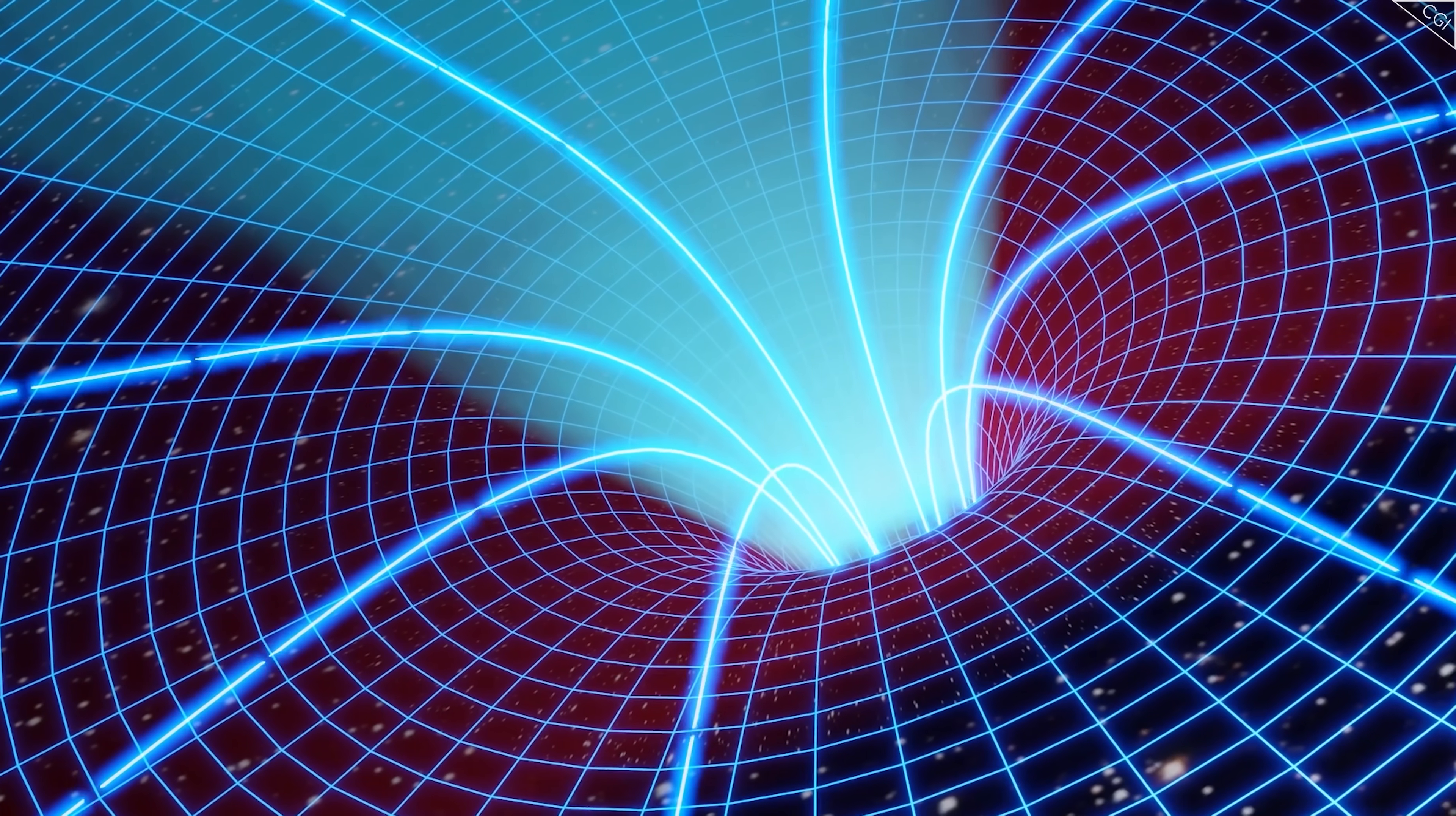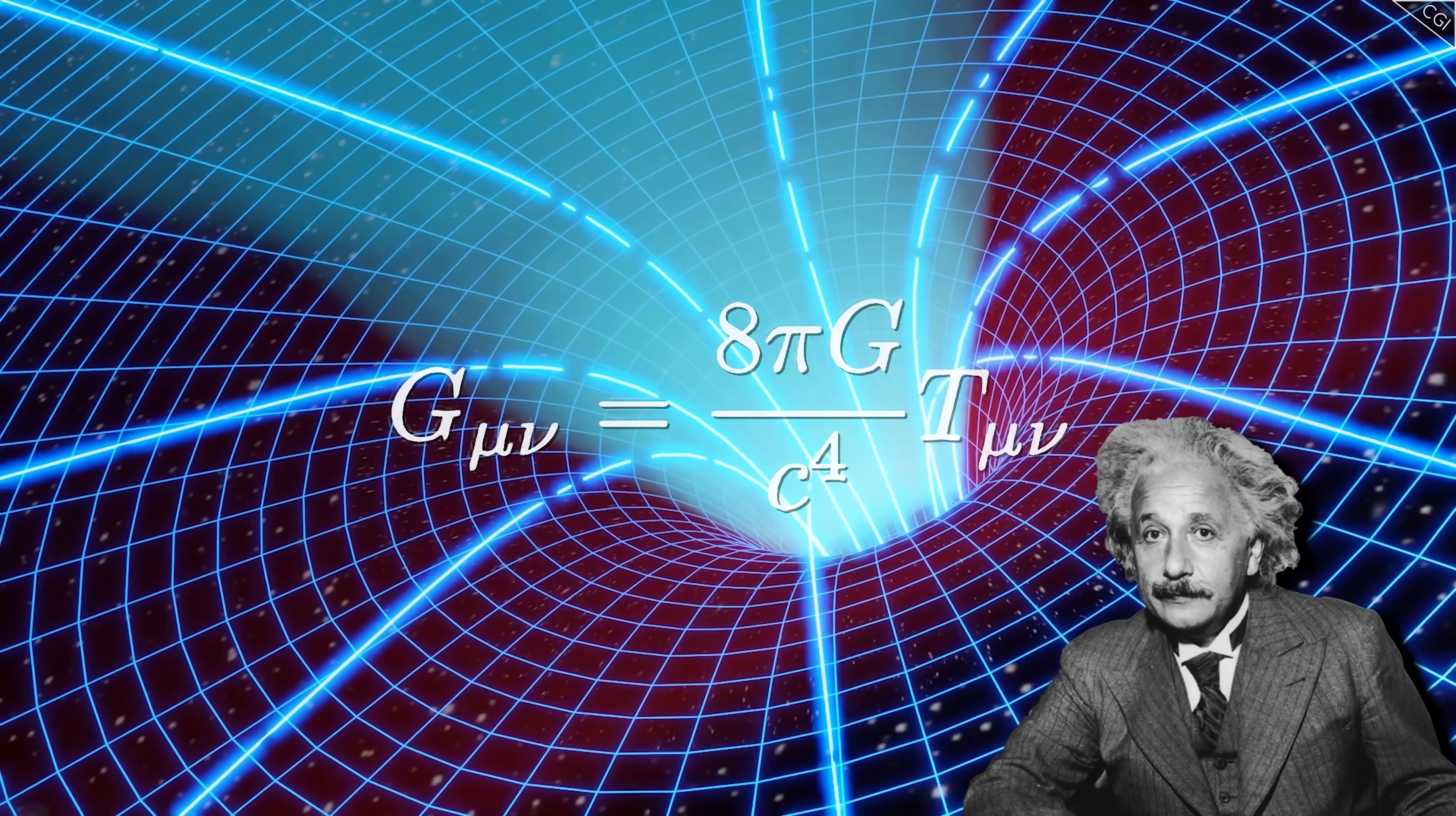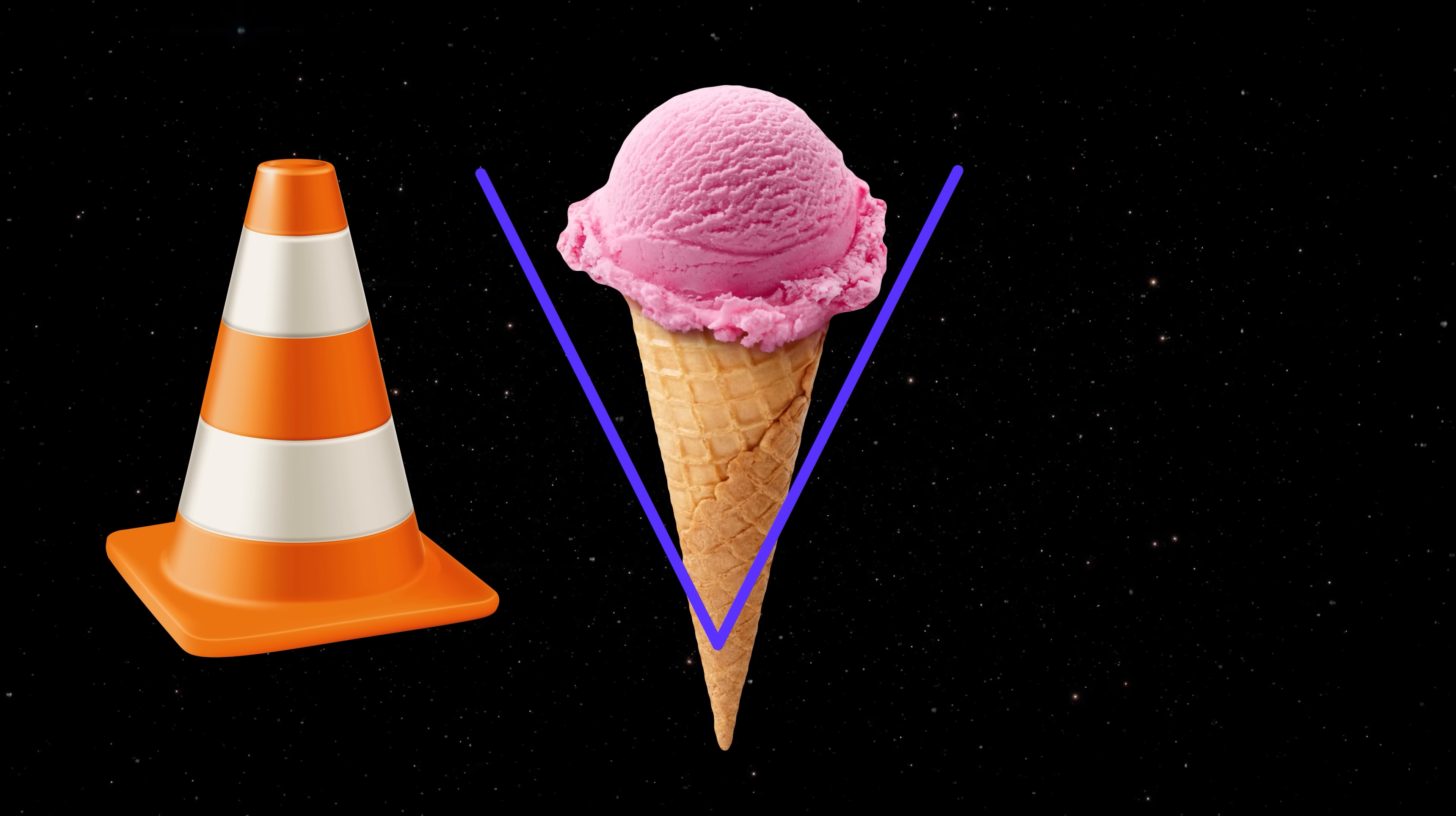Before we dive into the physics of spacetime, described by Einstein's theory of general relativity, I want to start off with a simple analogy. If I ask you to imagine a cone, you'll probably think of either something that points up like a traffic cone, or something that points down, like an ice cream cone.